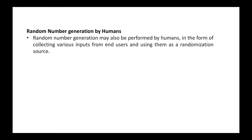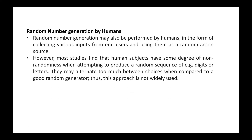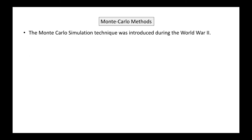Random numbers are also generated using humans by collecting various inputs from end users as a randomization source. However, most studies find that human subjects have some degree of non-randomness when attempting to produce a random sequence — for example, they may alternate too much between choices compared to a good random number generator. Humans have certain biases toward certain numbers, so they are not good random number generators.